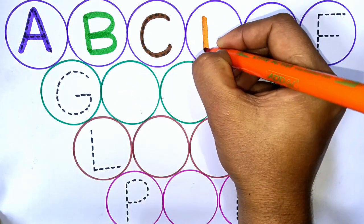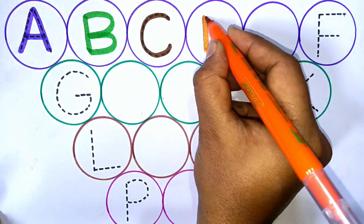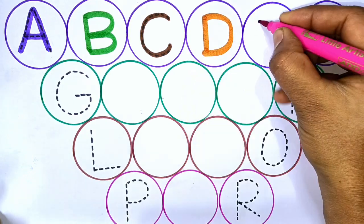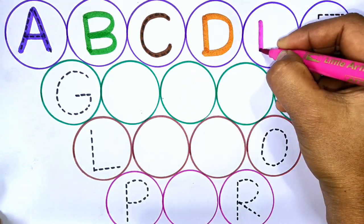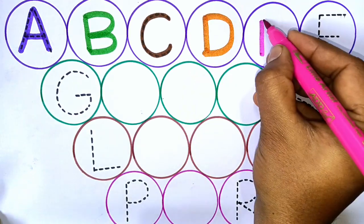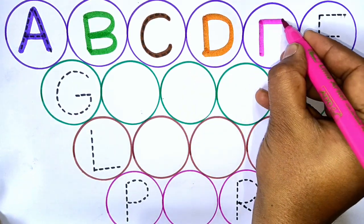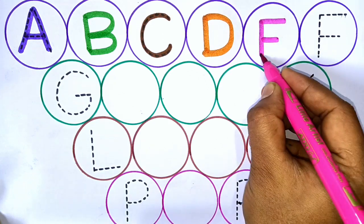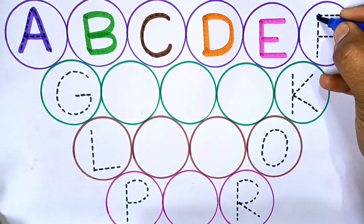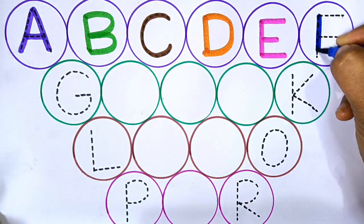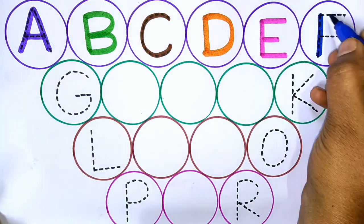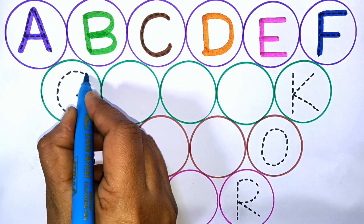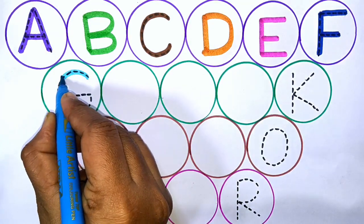A, A for apple. B, B for butterfly. C, C for cat. D, D for dog.